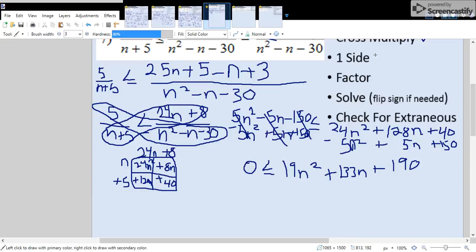So now we've moved everything to one side. Now let's see if we can factor anything out. All three of these numbers, like 19 goes into those numbers. So we can factor out a 19.